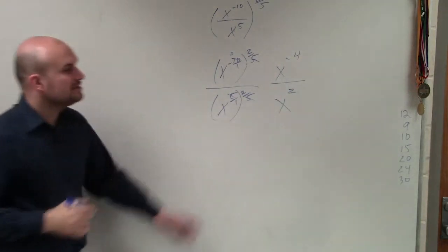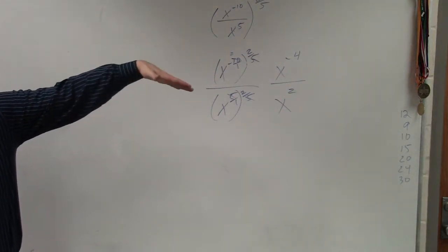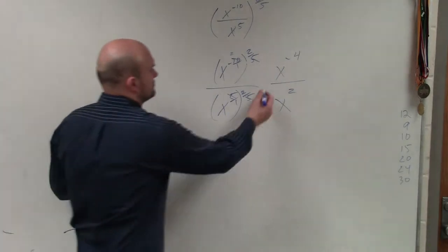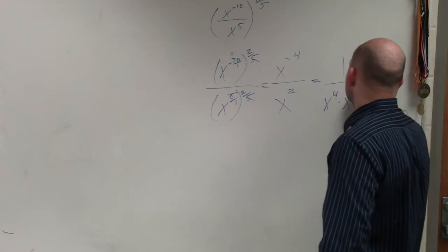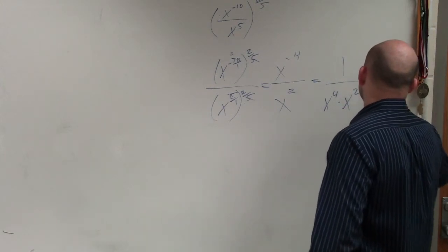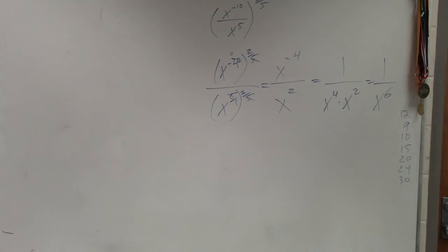Now remember, to rewrite x to the negative fourth as positive, I've got to put it in the denominator. So therefore, I'm going to have 1 over x to the fourth times x squared, which equals 1 over x to the sixth power. And that will be your final answer.